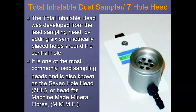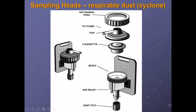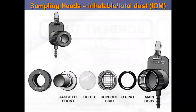The seven-hole head filter is used for inhalable dust. The cyclone filter is used for respirable dust — the cyclone part at the bottom acts as the grit pot, moving air in a cyclic manner so that respirable dust separates by aerodynamic diameter and collects on the filter paper. For the IOM sampling head, the filter and the cassette together are weighed — both before and after the eight-hour period.